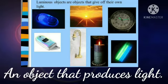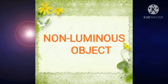Some examples of luminous objects are candle, sun, stars, lamp, etc. Our second term is non-luminous object.